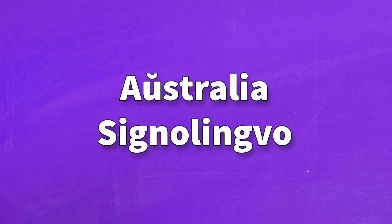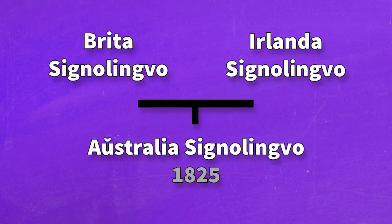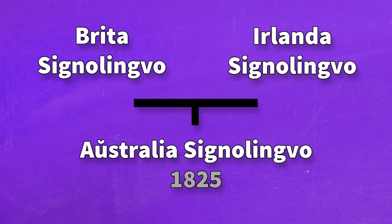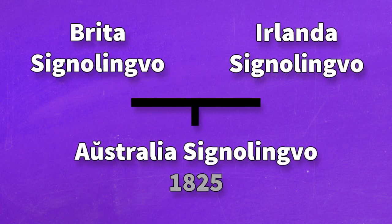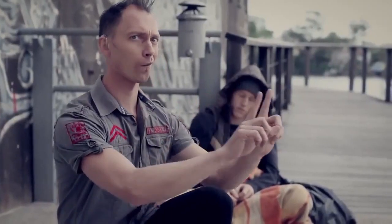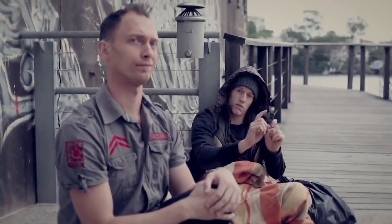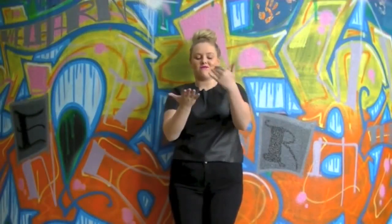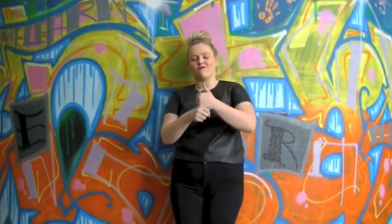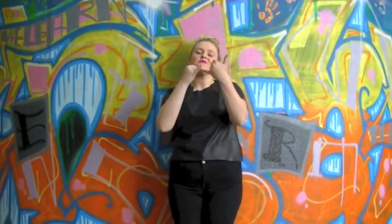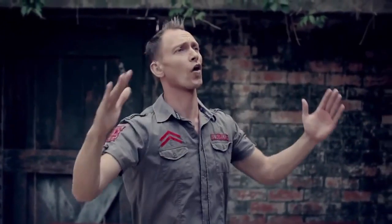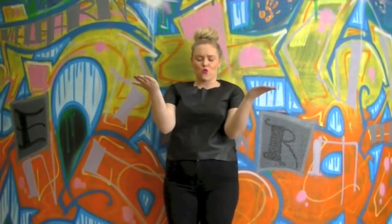The Australian sign language evolved from sign languages imported from Britain and Ireland in the 19th century. Some people call the Australian sign language a dialect of British Sign Language, but that is not quite right, because the two languages effectively share common parents — the British sign language of the early 19th century. Despite that, the two languages are largely mutually intelligible, sharing about 82% of signs.